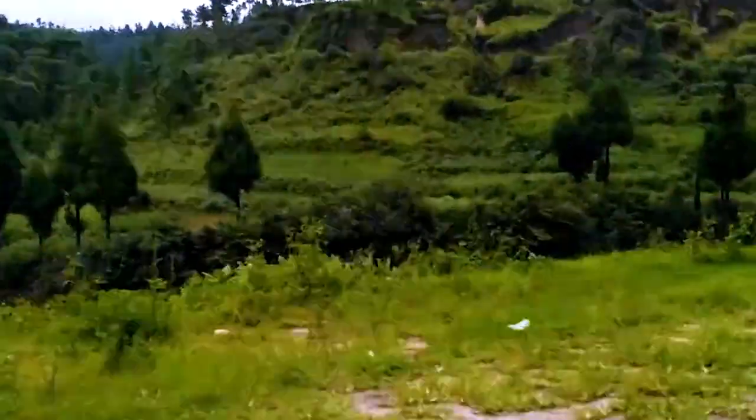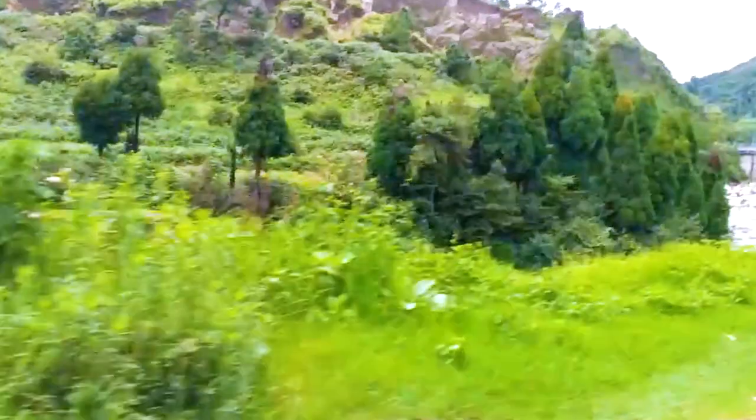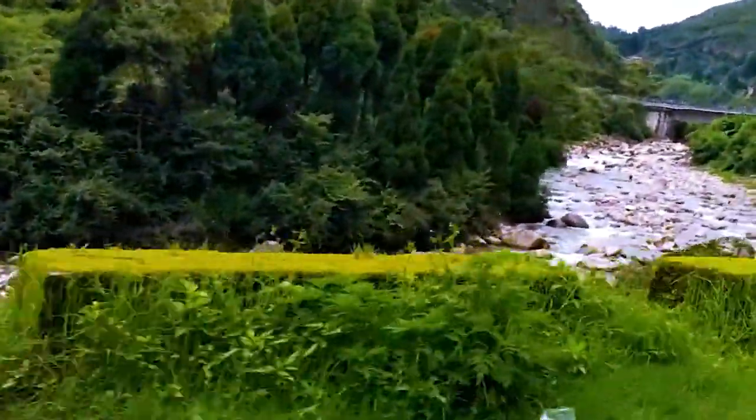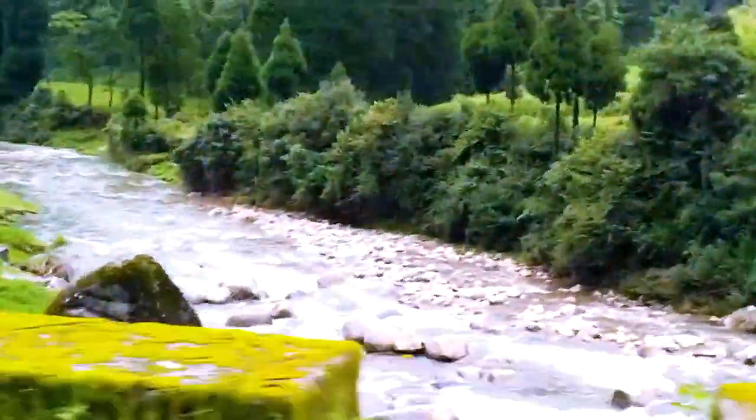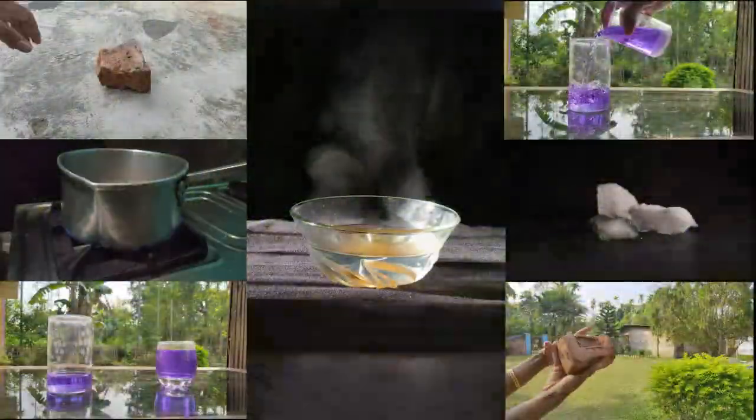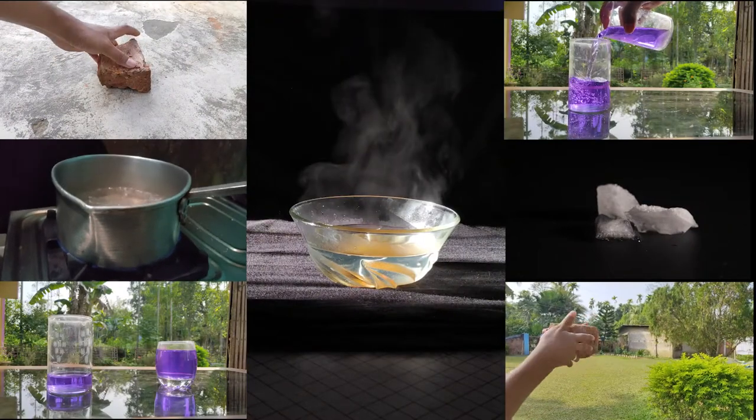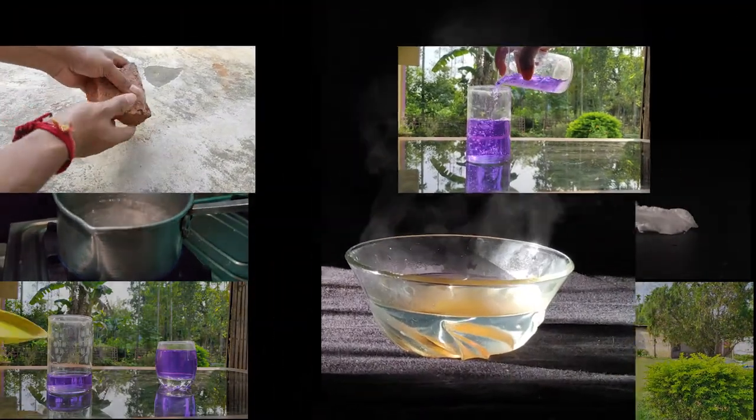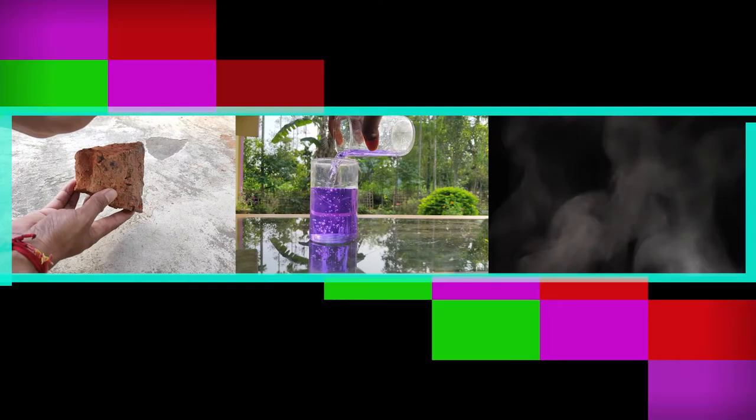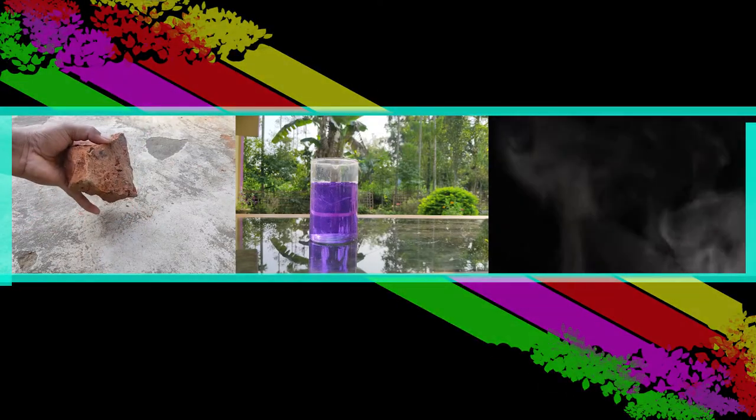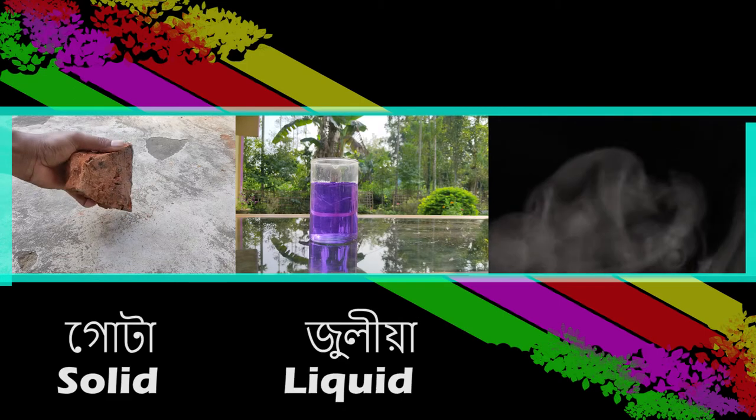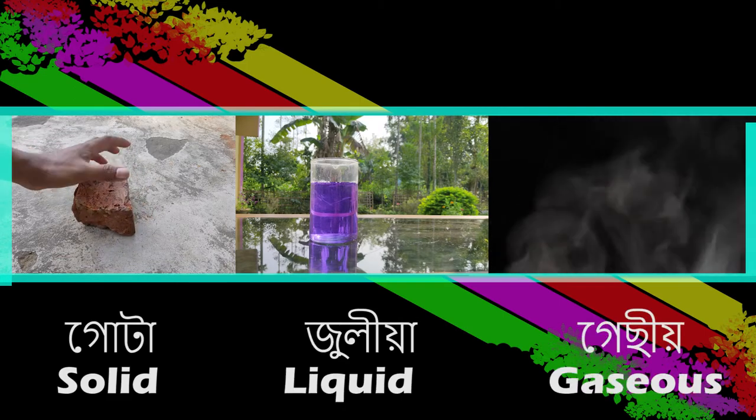As we look around in our surroundings, we see a wide variety of things with different shapes, sizes, and textures. Everything in the universe is made up of materials which scientists have termed as matter. When we observe different types of matter around us, we see that it exists in three different states: solid, liquid, and gas.